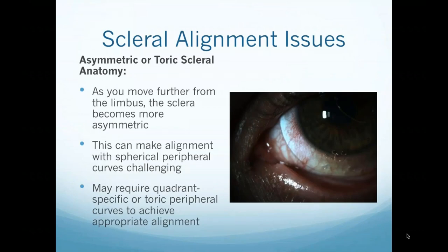With larger lenses, an asymmetric or toric scleral anatomy presents more of a problem with a spherical peripheral system, making alignment challenging. Sometimes we order a quadrant-specific or toric peripheral curve, modifying one meridian or quadrant to better align with the patient's sclera. In one example, the patient had blanching in the horizontal meridian but too much edge lifting — with bubbles entering — in the vertical meridian. Modifying one meridian would worsen the other if done 360 degrees around the lens, so this patient required a toric periphery.